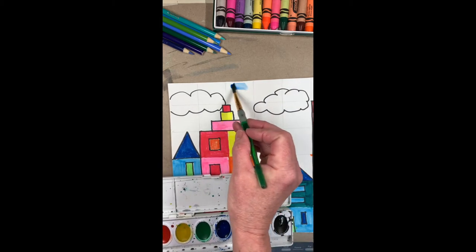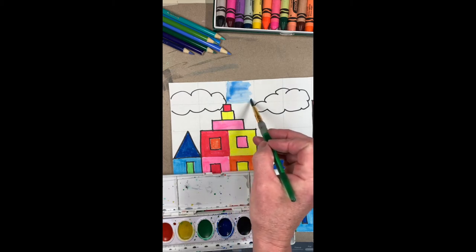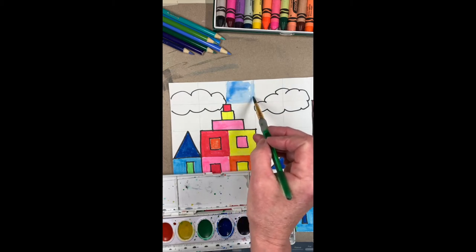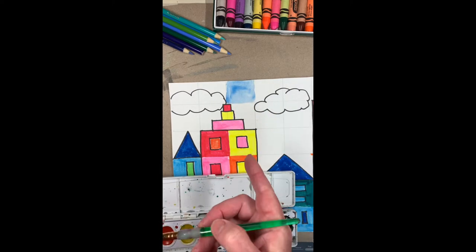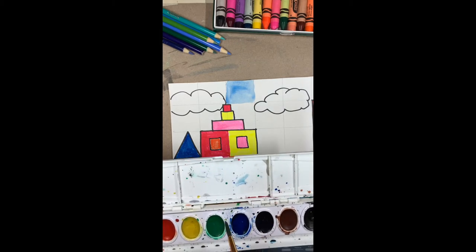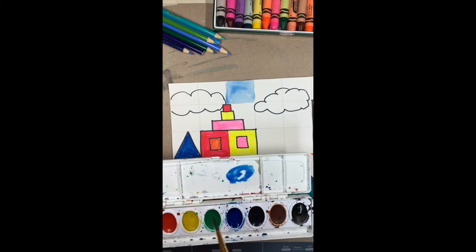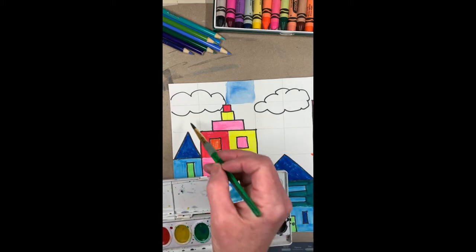So you could take it and you can paint the squares with blue. Now what you can do is, if I'm painting the square here, I'm going to let that dry a little bit and you can kind of use the set here to help you out.